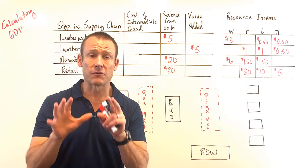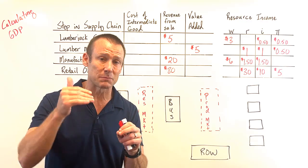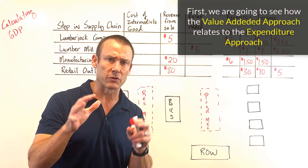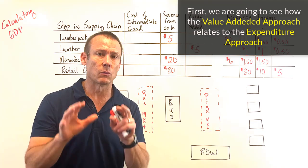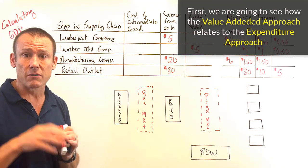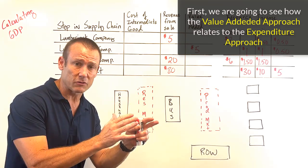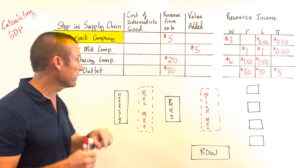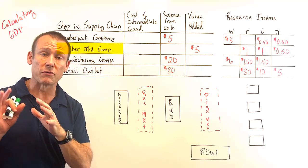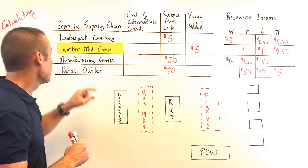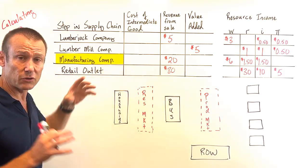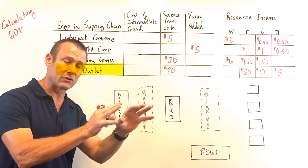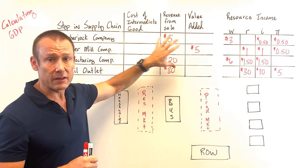We'll start with a hybrid of the value-added and expenditure approaches to see how they relate to each other. We're going to make a baseball bat from the ground up — from the beginning of the supply chain to the end. A lumberjack cuts down a tree, a lumber mill refines the log into lumber, a manufacturer makes the baseball bat, and then a retail outlet sells it to the customer.